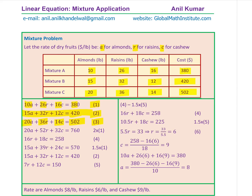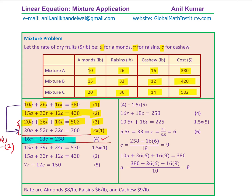I'm going to multiply equation 1 by 2. Once I do that, the coefficient of 'a' becomes 20, and I can subtract one equation from the other. Subtracting equation 3 minus this result: 20a − 20a = 0, and 52r − 36r = 16r, and 32c − 14c = 18c, giving 760 − 502 = 258. So equation 4 is 16r + 18c = 258, an equation in r and c only.